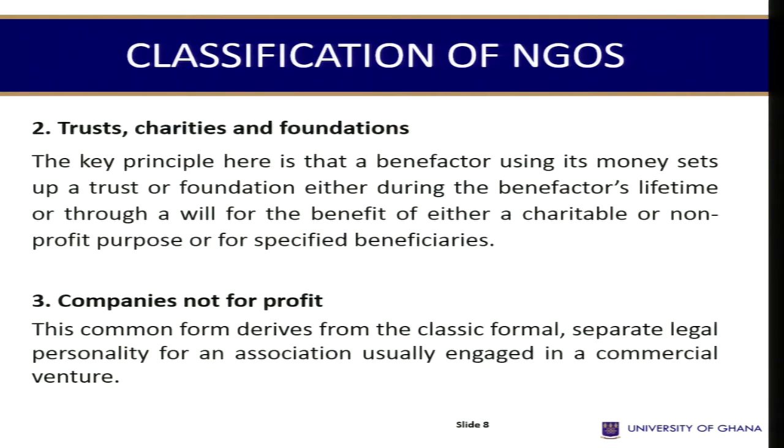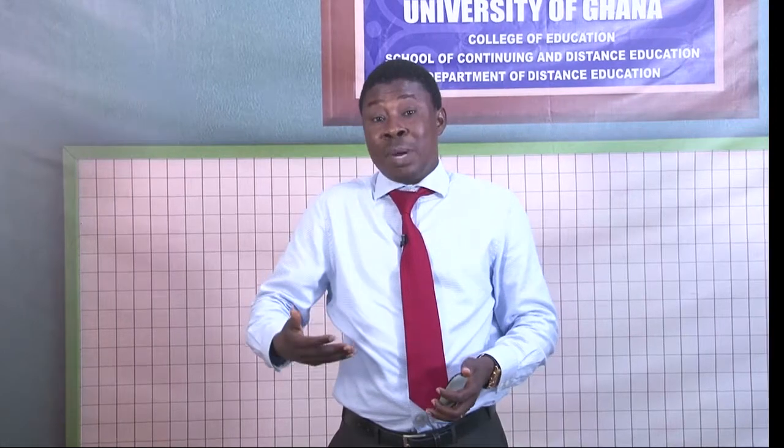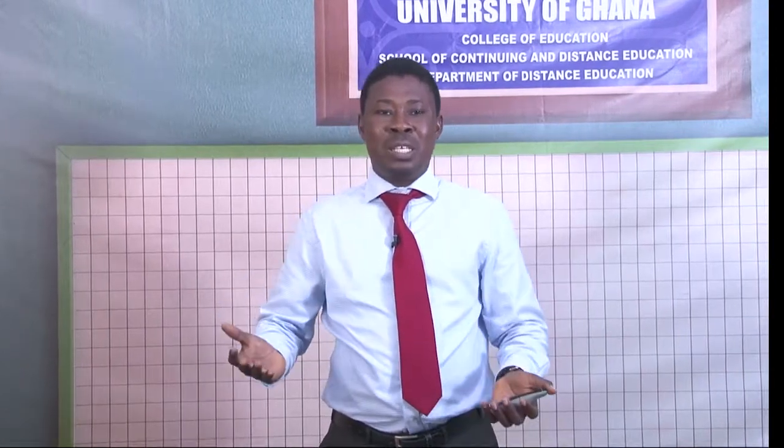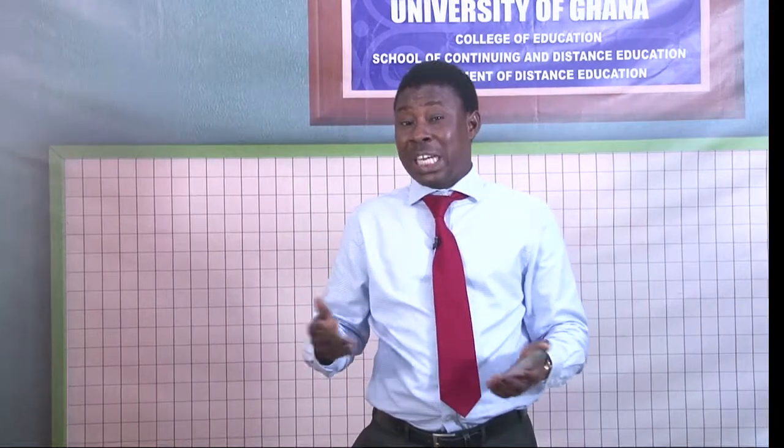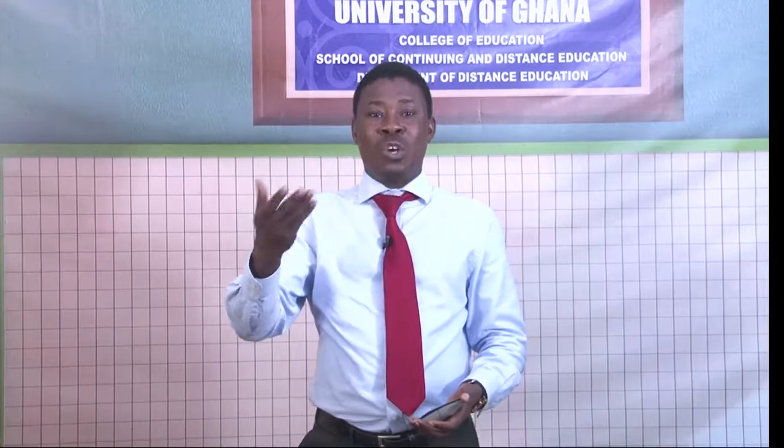Stillman also talks about trusts, charities, and foundations — organizations that usually have resources available and want to give those resources to people. These are usually established by accomplished individuals who have made a lot of money and want to give back to society. Examples include the Bill and Melinda Gates Foundation, which has significant funds to give to organizations doing work in different areas, and the Mo Ibrahim Foundation, which supports governance activities in Africa.